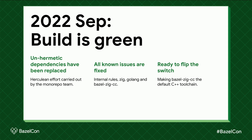In September we finally had the full build pass. All the hermetic dependencies had been replaced — this was a herculean effort carried out by the mono repo team, and Ken Miklas in particular. All the relevant known issues across zig cc, Golang, our internal rules, and bazel-zig-cc were fixed. So we flipped the switch to make bazel-zig-cc the default toolchain.